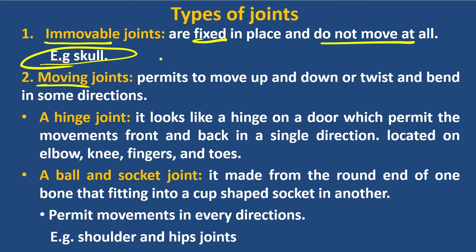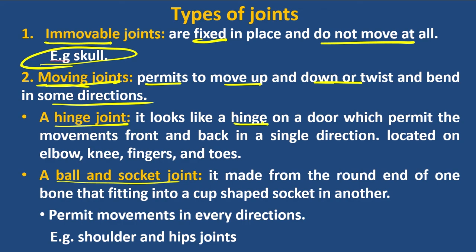If you want to move up and down, or rest and bend in some direction — up and down, back and forth — the hinge joint permits movement. It looks like a hinge on a door which permits movement front and back in a single direction. The joint will be contained.